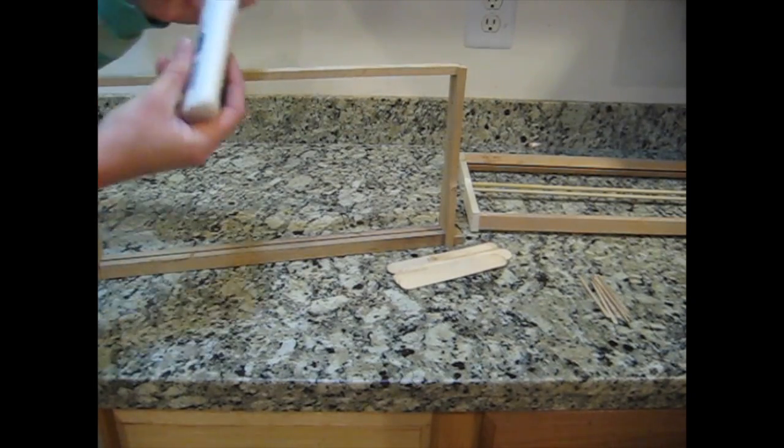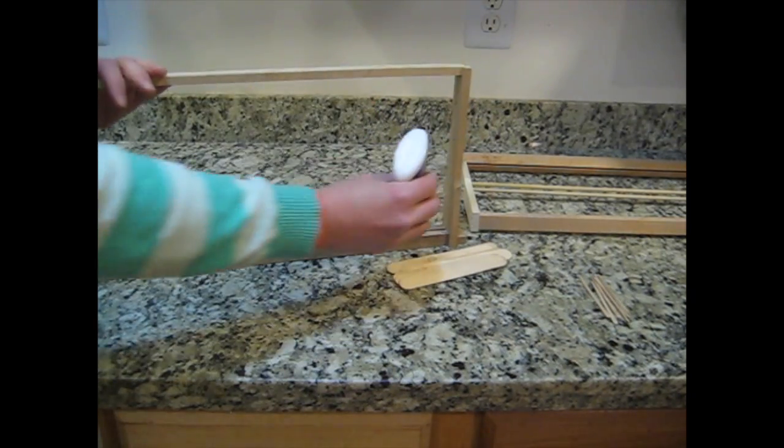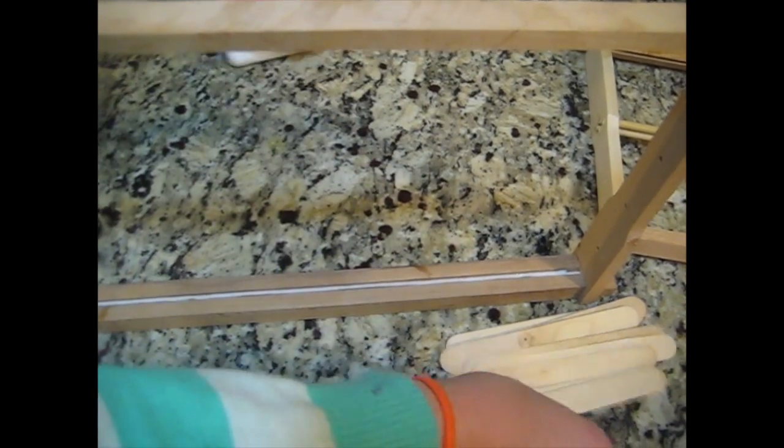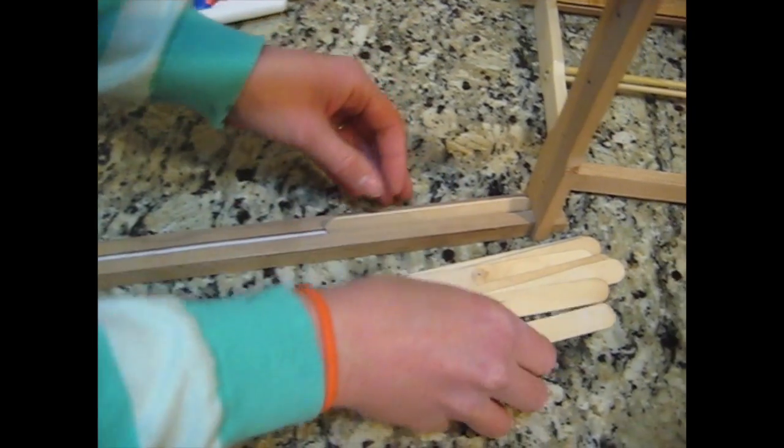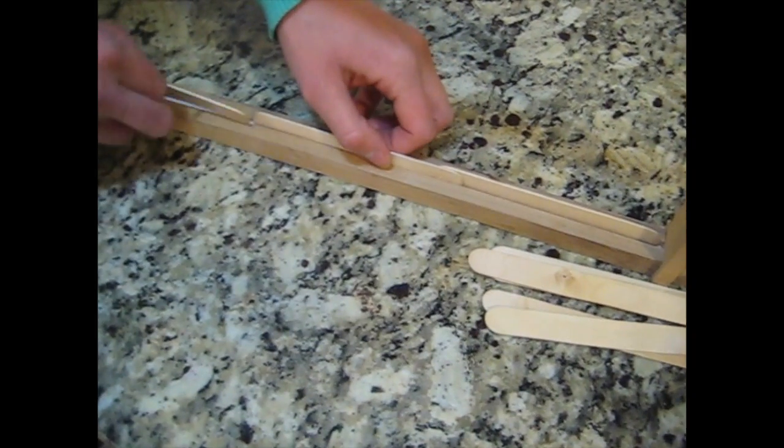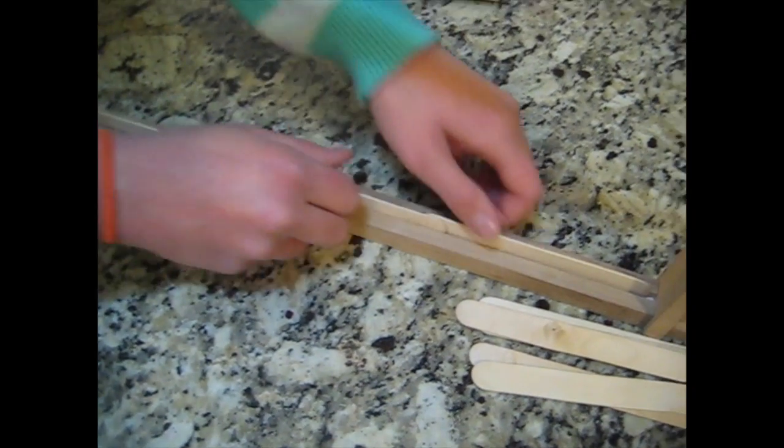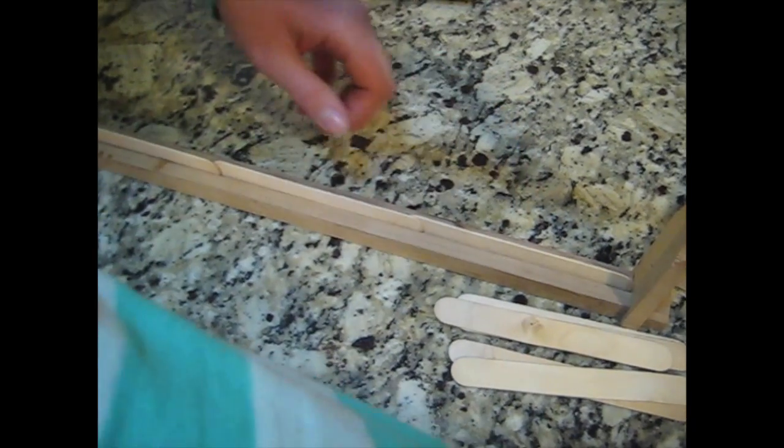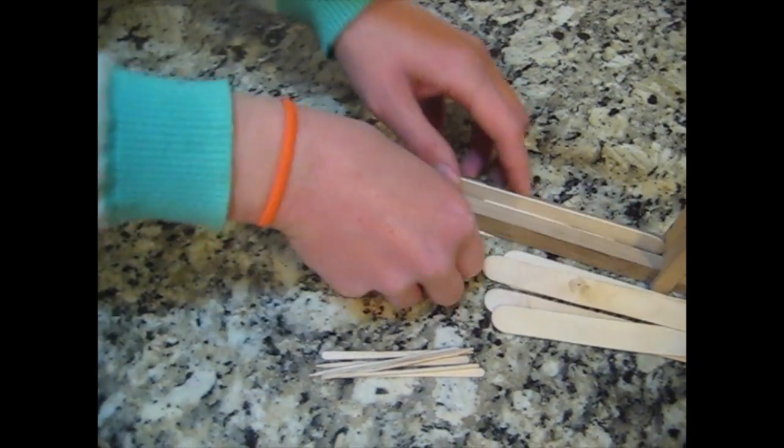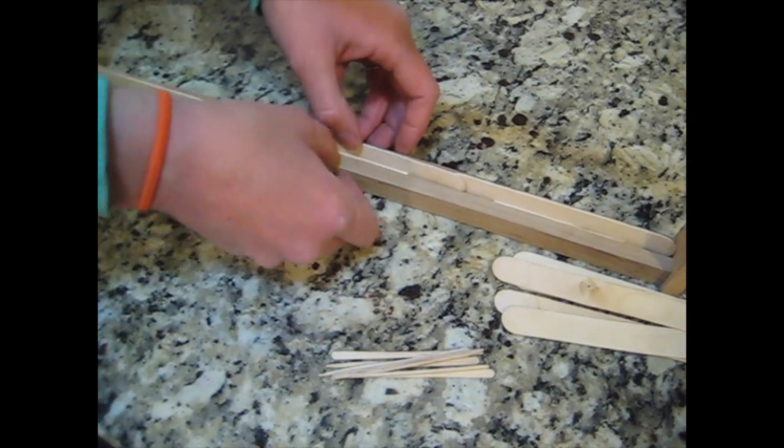So to do this, we'll just take some glue. You can use Elmer's glue or wood glue and put some into the top bar here and then we'll place some jumbo craft sticks in here. You can use any size, but that's what we have today.